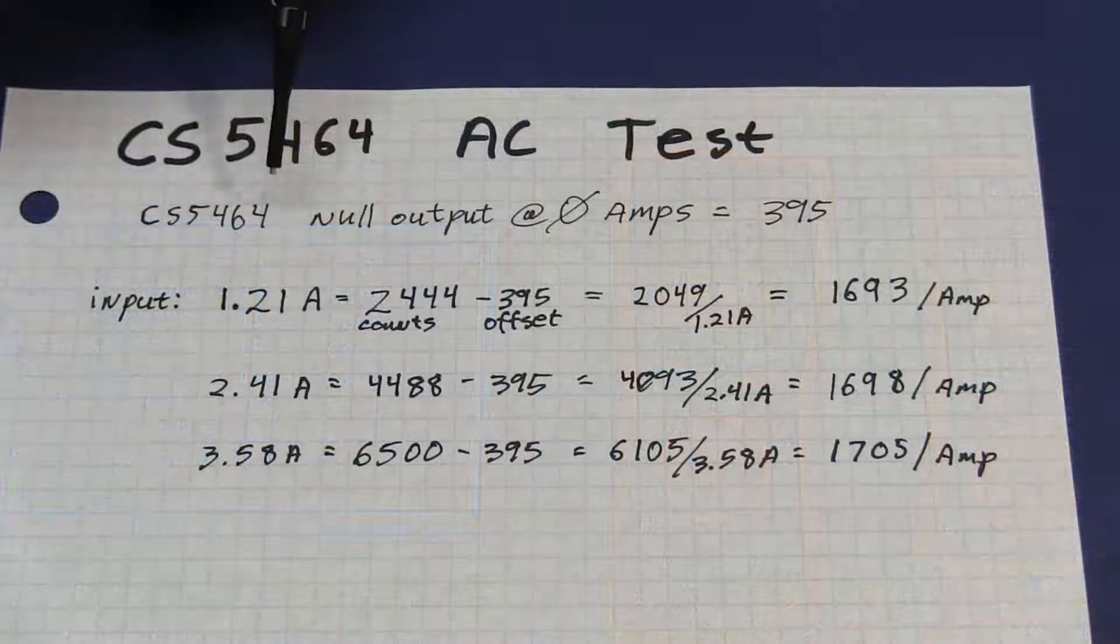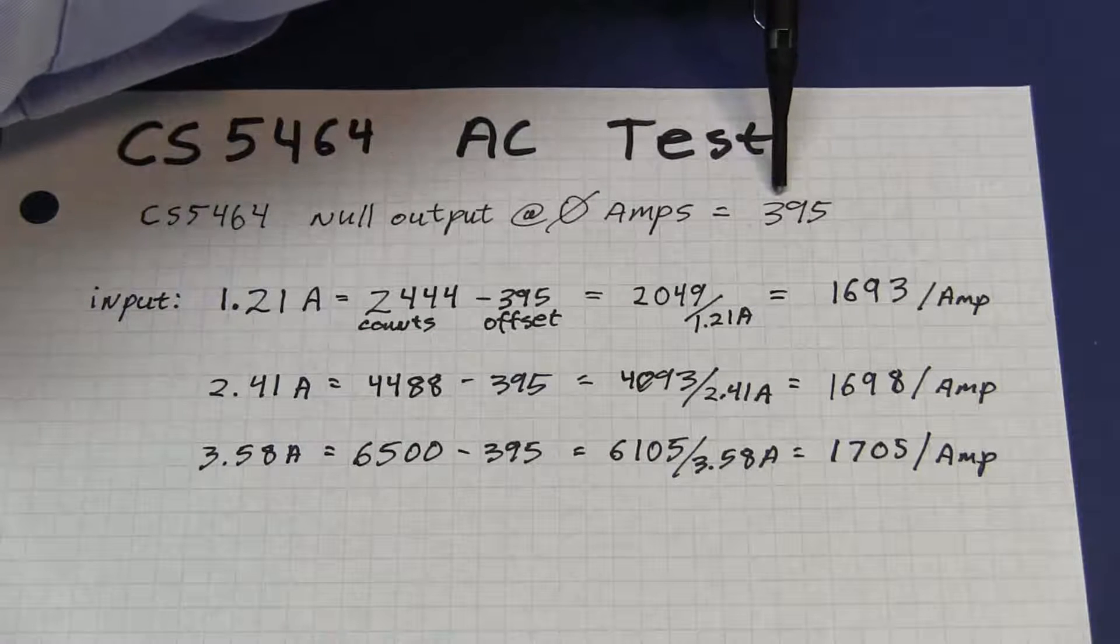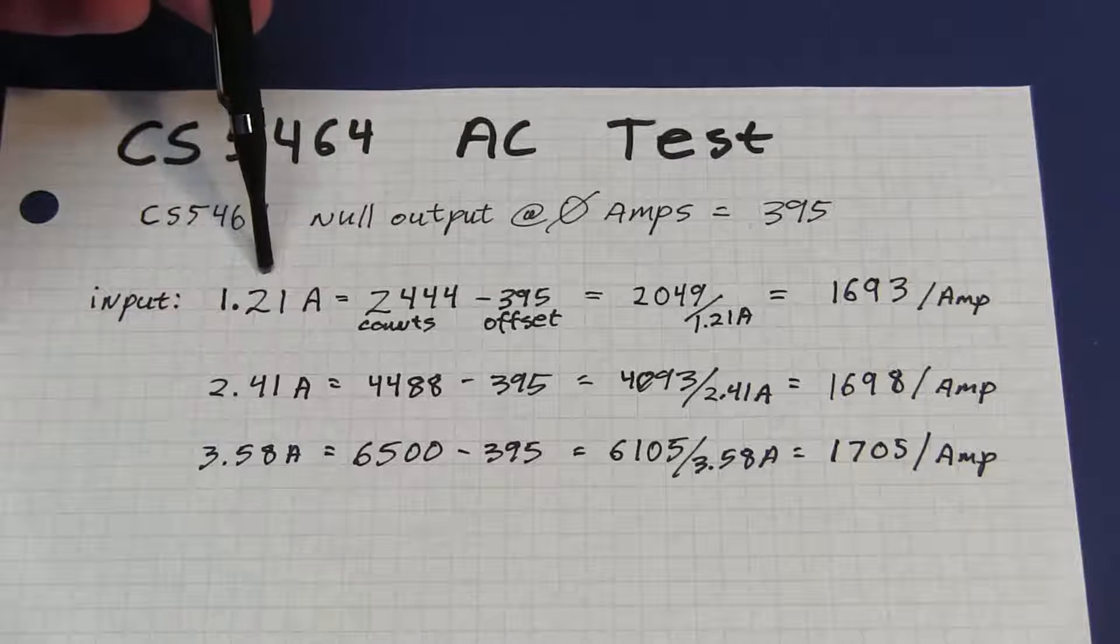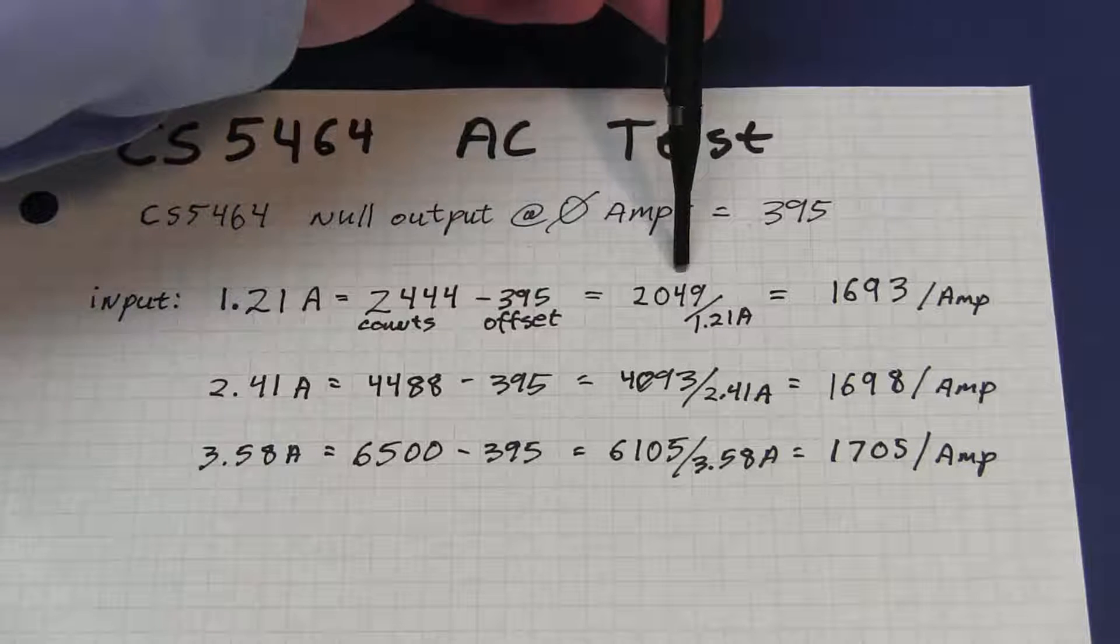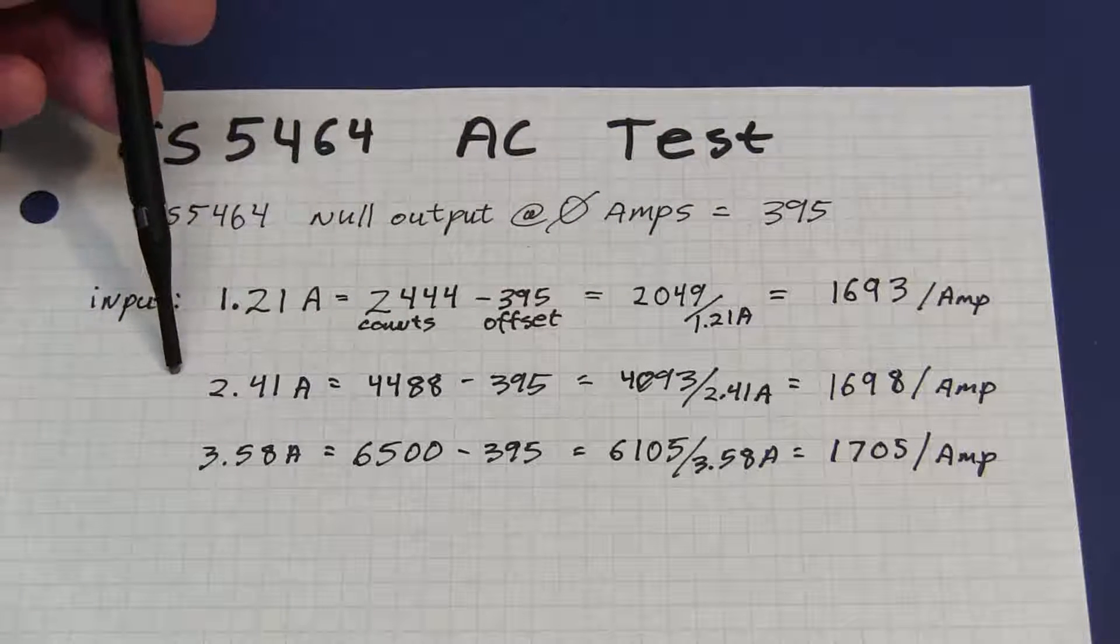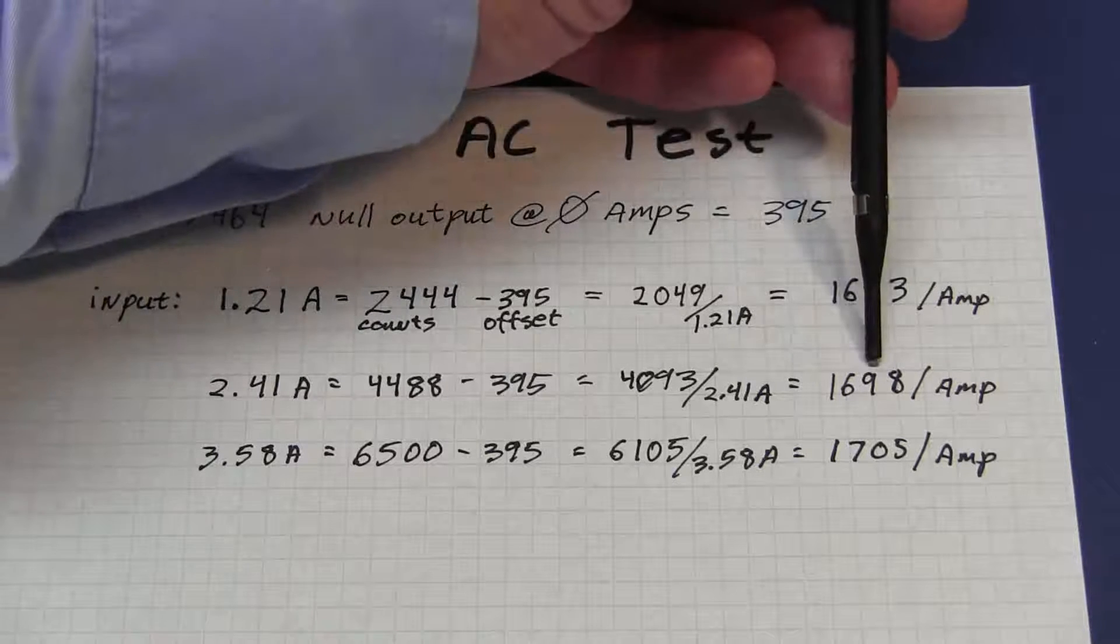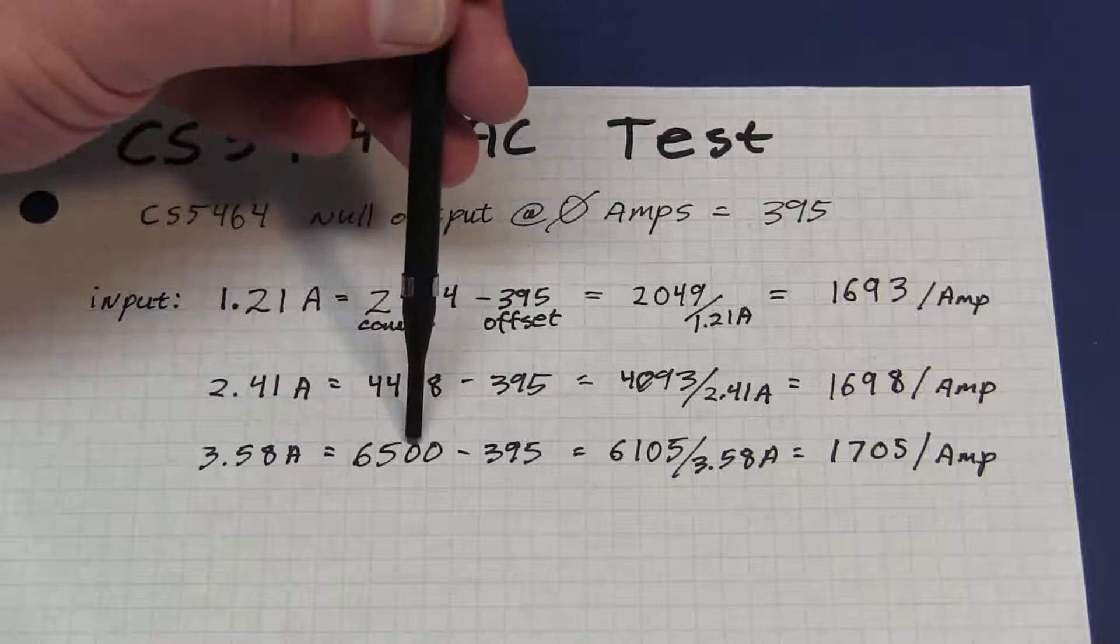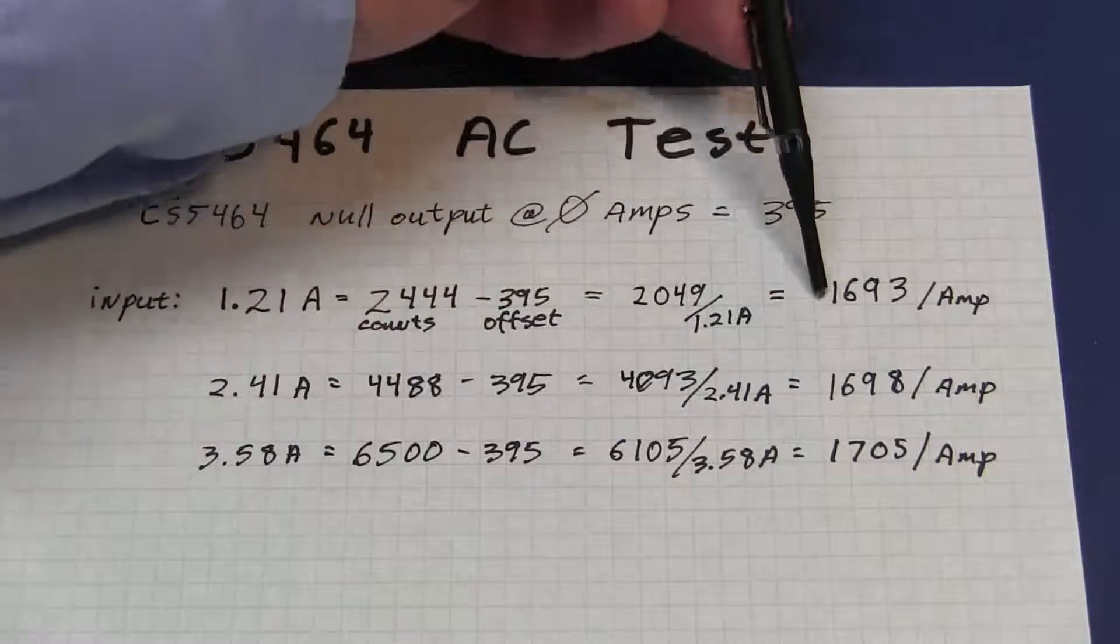So let's check the numbers. The CS5464 provided a null output at 0 amps with no current flowing through the Kelvin shunt - we had a reading of 395 counts. With an input of 1.21 amps true RMS according to the meter, we had a reading of 2444 counts minus our 395 offset, calculated out to 1693 counts per amp. When we turned on a second lamp we got 2.41 amps with a reading of 4488 - that calculated out to 1698 per amp, very linear. And then at three lamps, 3.58 amps, 6500 count gave us a reading of 1705 per amp. So again, very closely correlated. Hopefully this will continue as I test it out a little later with higher and higher currents.